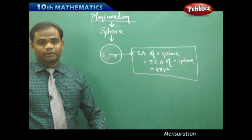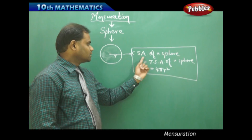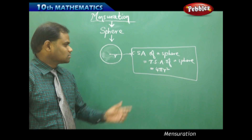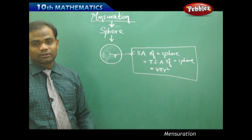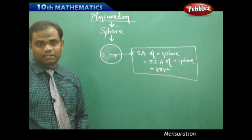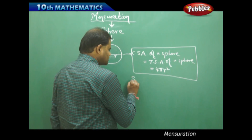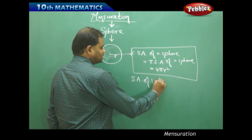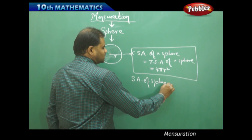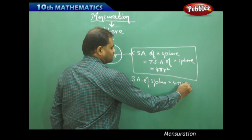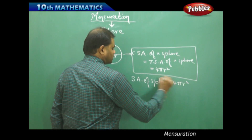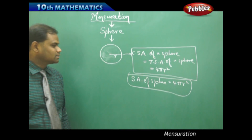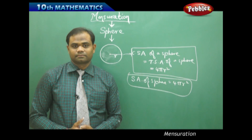The proof of this is beyond the syllabus. Because the curved surface and total surface are equal in a sphere, we simply call this the surface area of a sphere, which is 4πr² square units. This is how we understand the surface area.